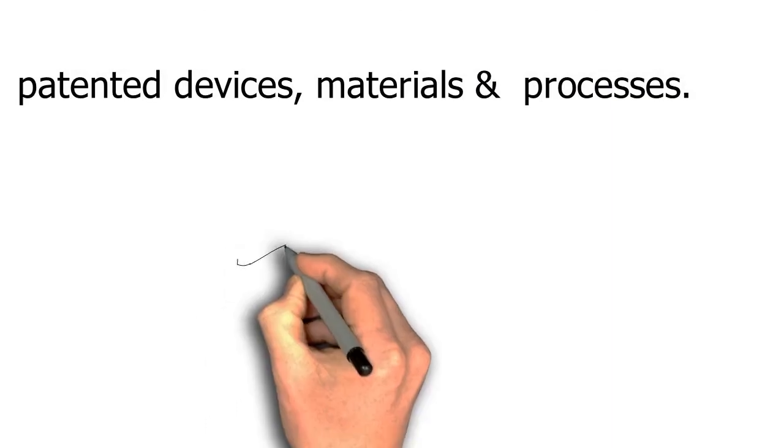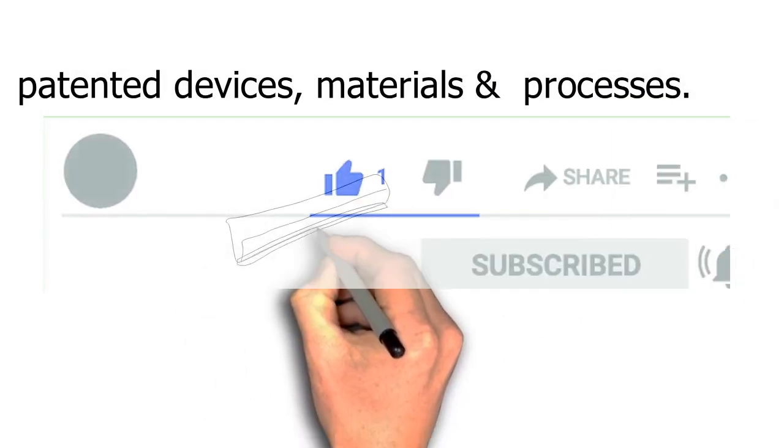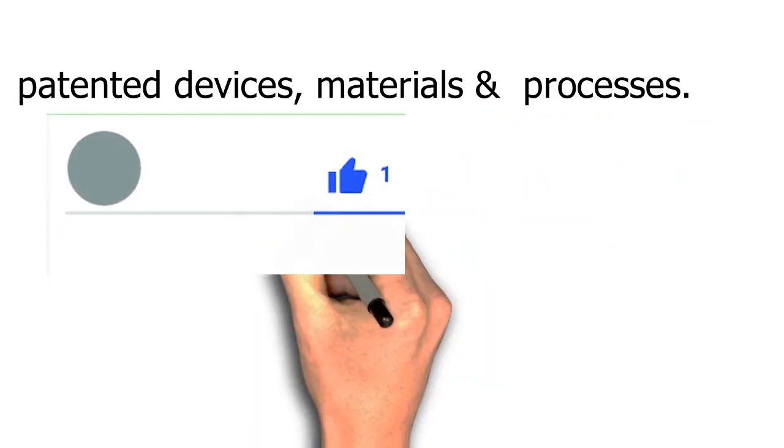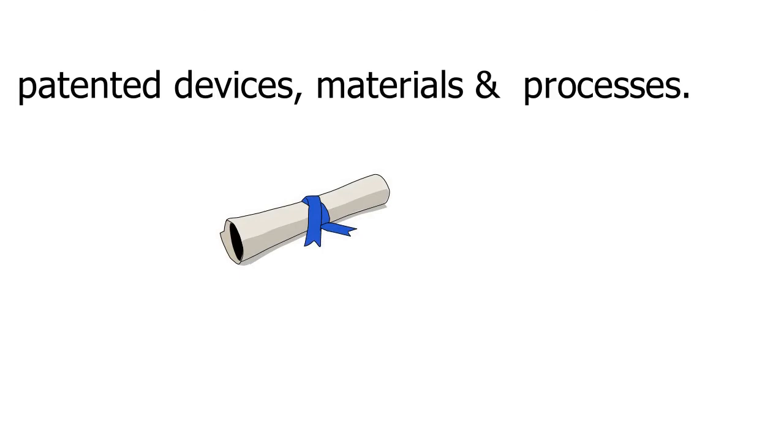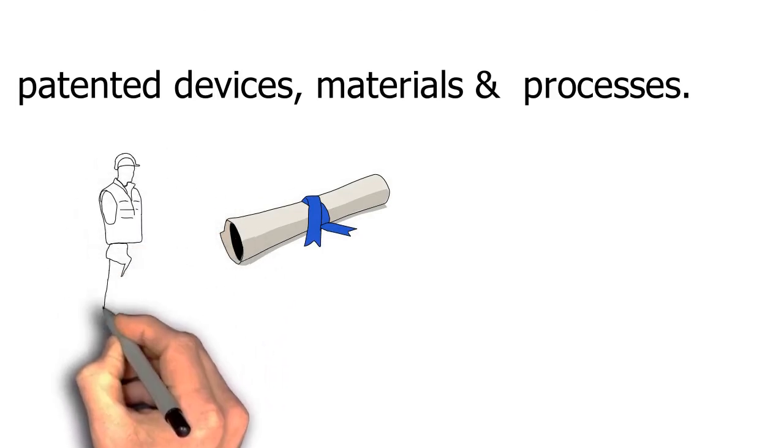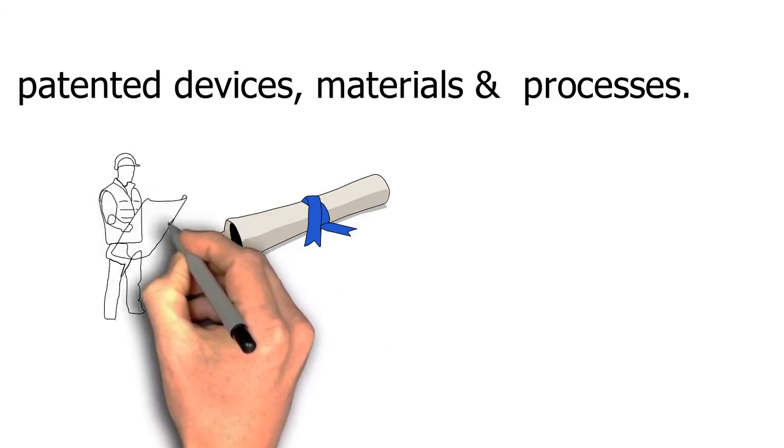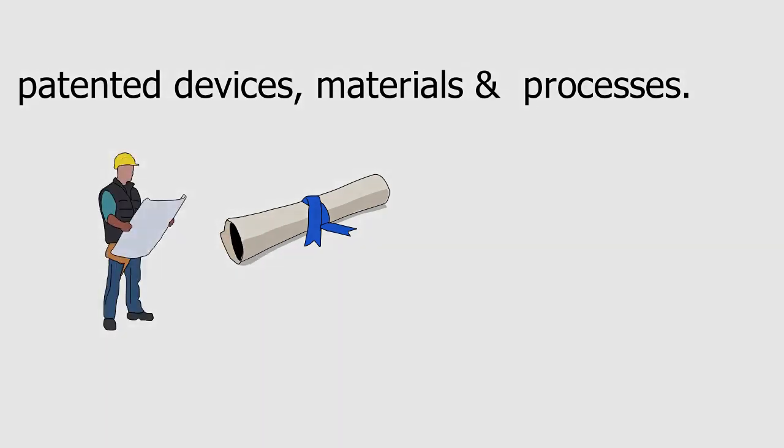Patented devices, materials, and processes: If the contractor is required or desires with the approval of the engineer to use any design, device, material, or process covered by trademark, patent, or copyright, the contractor shall obtain the right for their use by legal agreement.